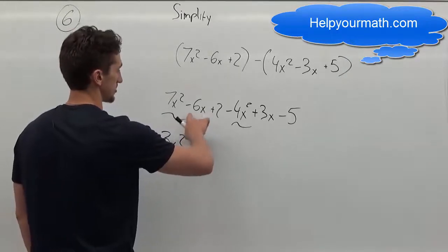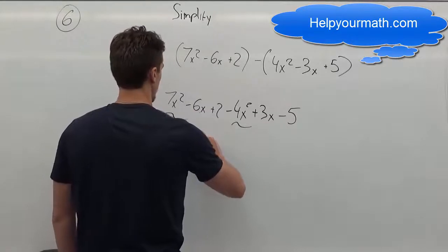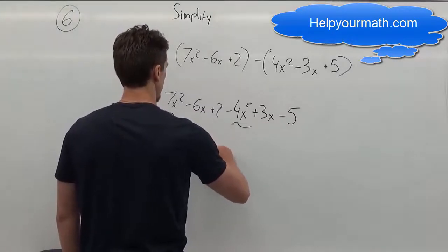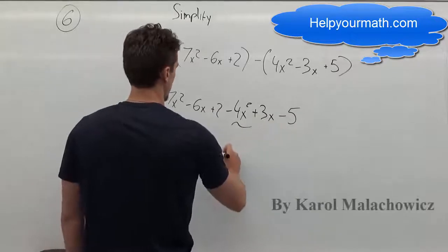Then x is minus 6x and plus 3x. It's going to be minus 3x. And then in the end just numbers. 2 and minus 5. It's going to be minus 3.